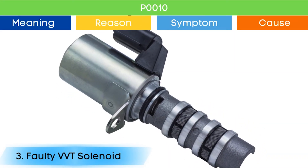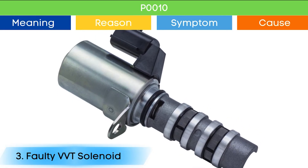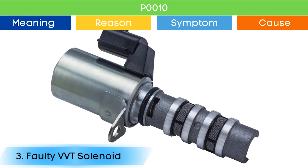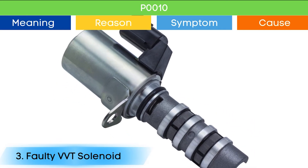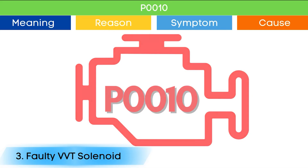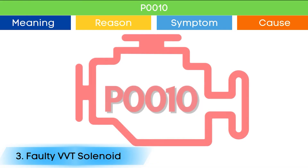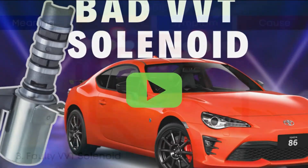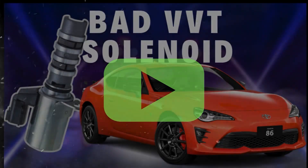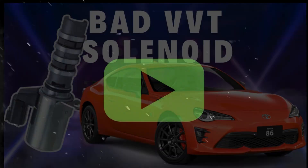Cause number three: bad VVT solenoid. Due to a bad VVT solenoid, the camshaft position advance and delay may not work properly, which may trigger P0010 and other OBD2 codes related to the VVT solenoid, along with symptoms of a bad VVT solenoid. Check our detailed video to learn more about the symptoms of a bad VVT solenoid and related OBD2 codes — link in the corner.